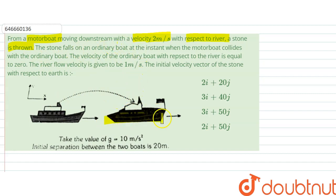This is an ordinary boat here and this is a motorboat. At the instant when the motorboat collides with the ordinary boat, the velocity of the ordinary boat with respect to the river is equal to zero. The river flow velocity is given to be one meter per second, so river is flowing at one meter per second.